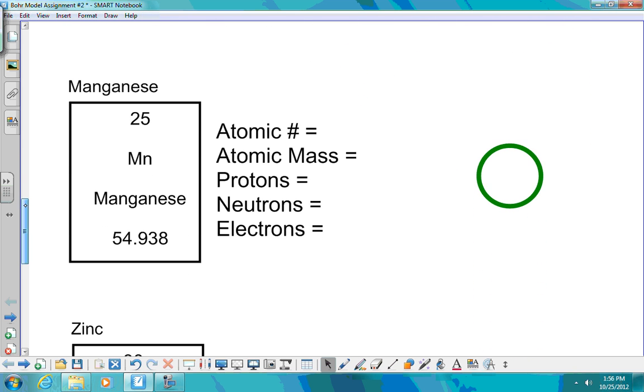Next, we're going to do manganese. Manganese has an atomic number of 25. Its atomic mass, rounded, will be 55. I have 25 protons, 30 neutrons. Got to do the right math. 30 neutrons and 25 protons. So we'll start with what's in the nucleus. We have 25 protons, 30 neutrons.